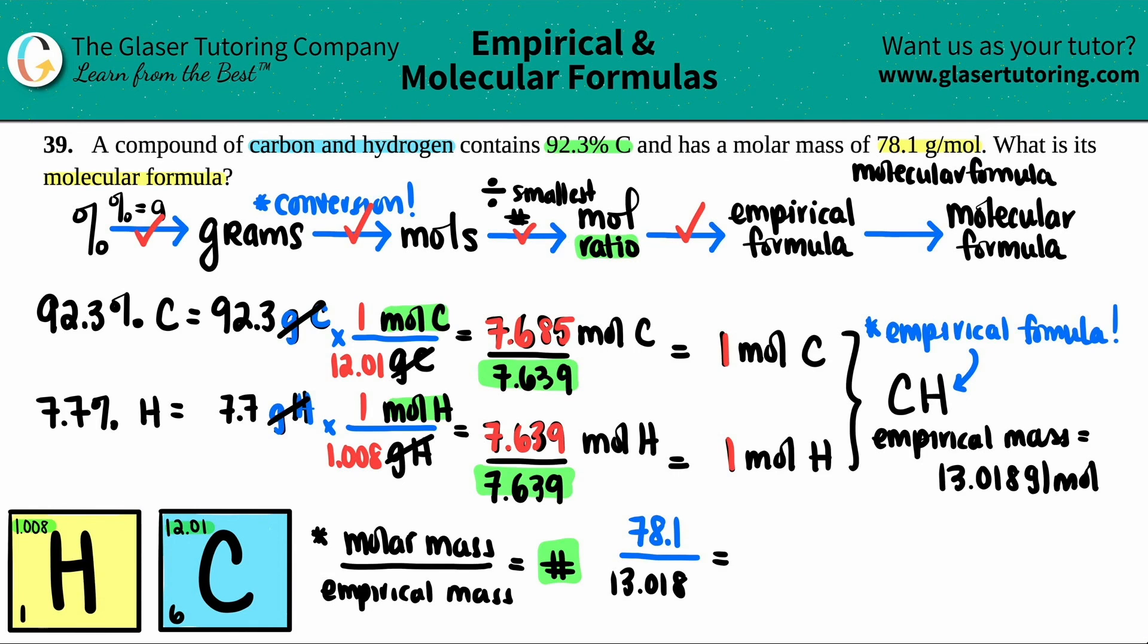Now in this case, this should be a whole number. You're basically finding out how much larger the molecular formula is from your empirical formula. So I get 5.999, but this technically rounds to six. This is the number that you are going to multiply by your subscripts. So it was CH, right? And there was one carbon and one hydrogen.